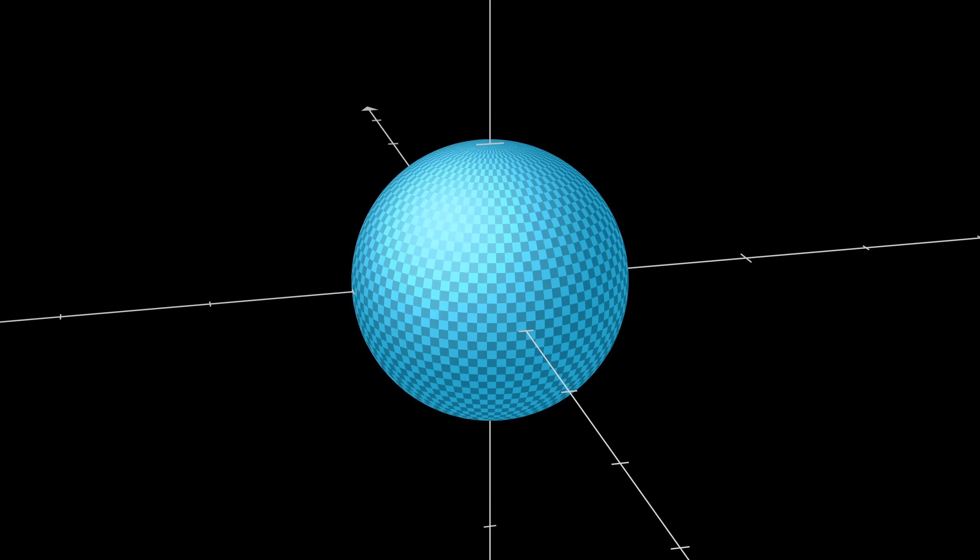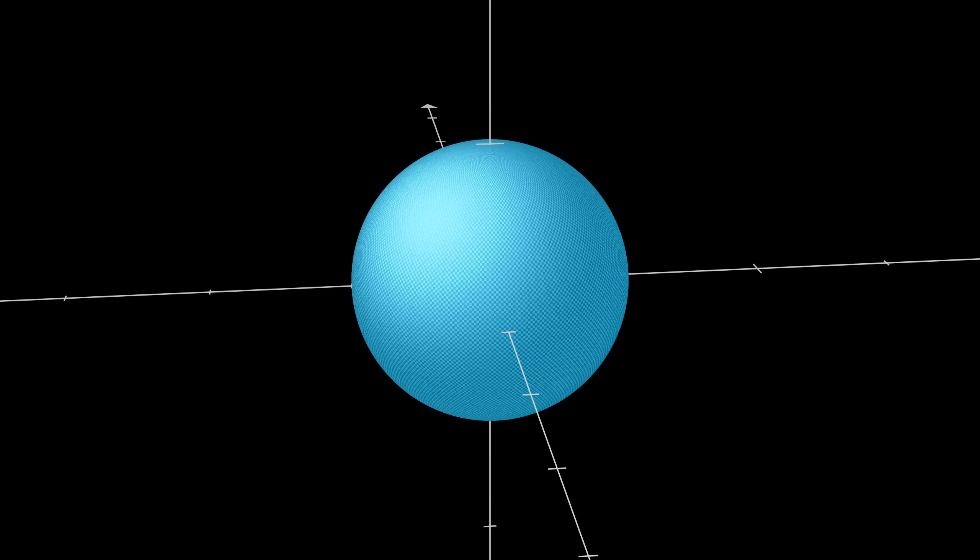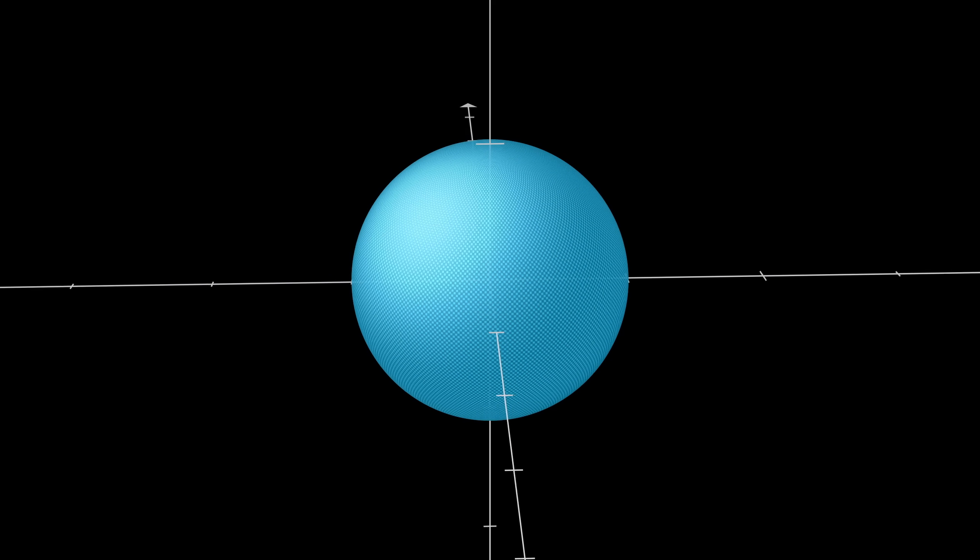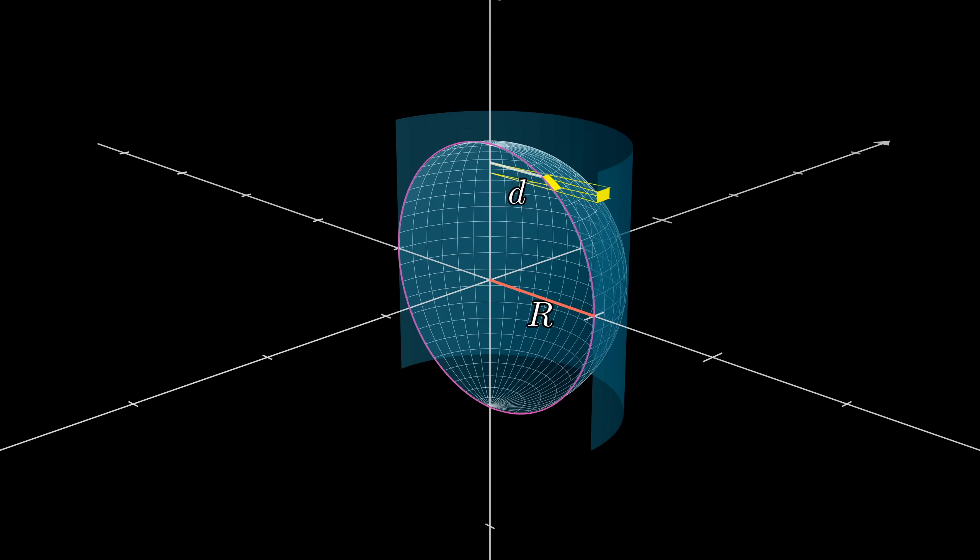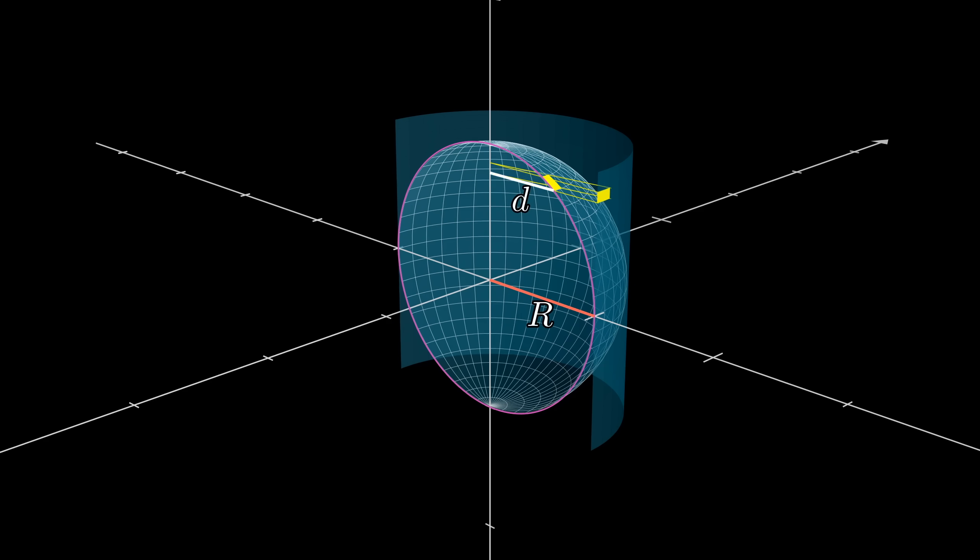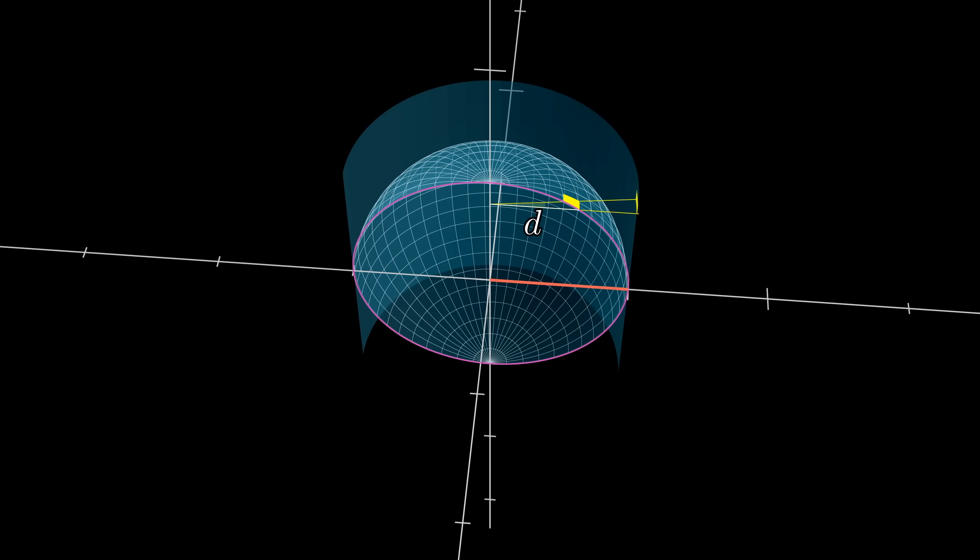And tinier and tinier is when this approximation with rectangles gets closer to the true surface area anyway. To choose an arbitrary standard, let's say that d is the distance from the bottom of the rectangle. Now to think about projecting this out to the cylinder, what we're going to do is picture two similar triangles.